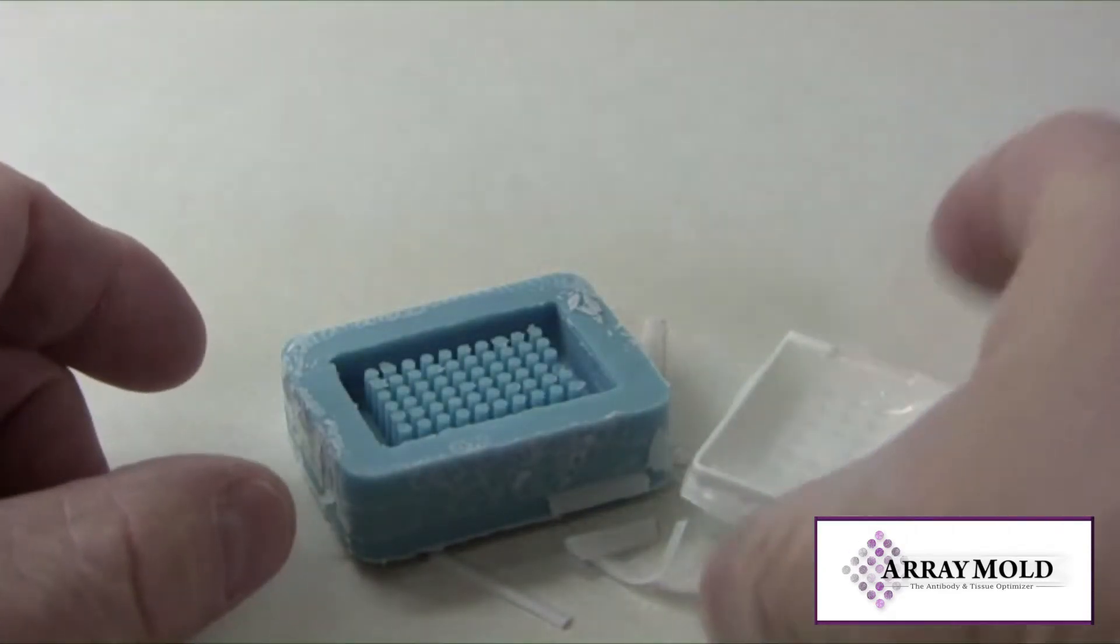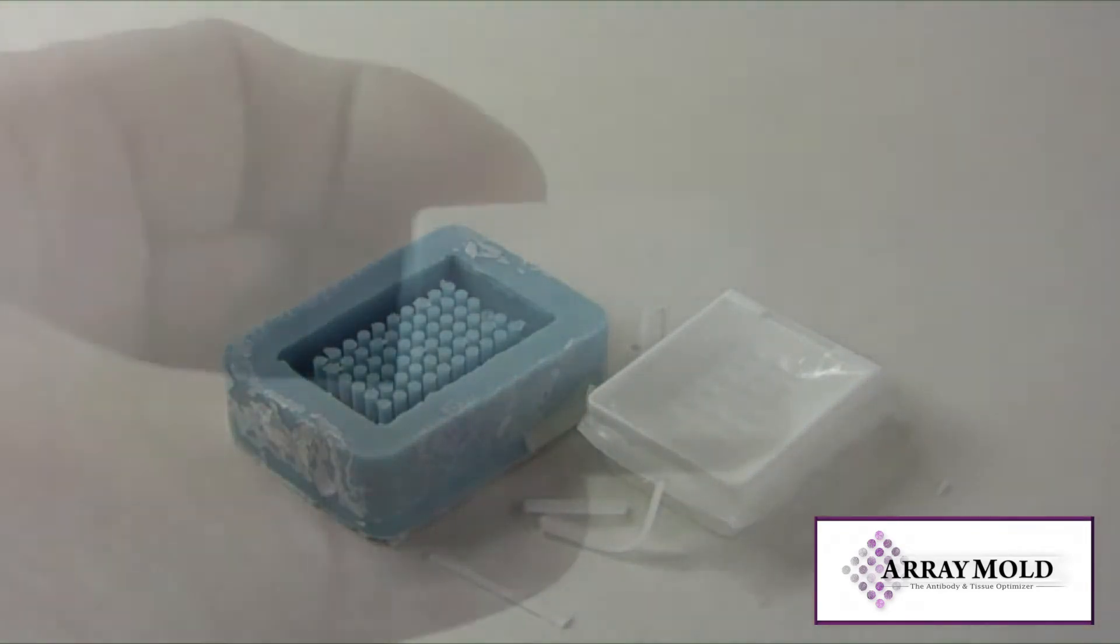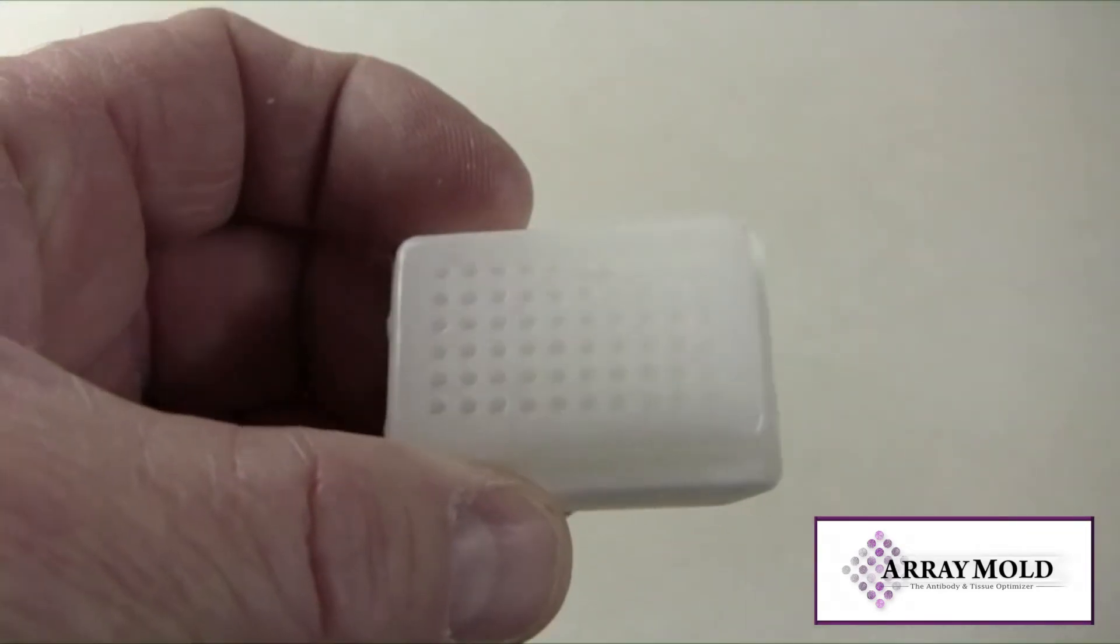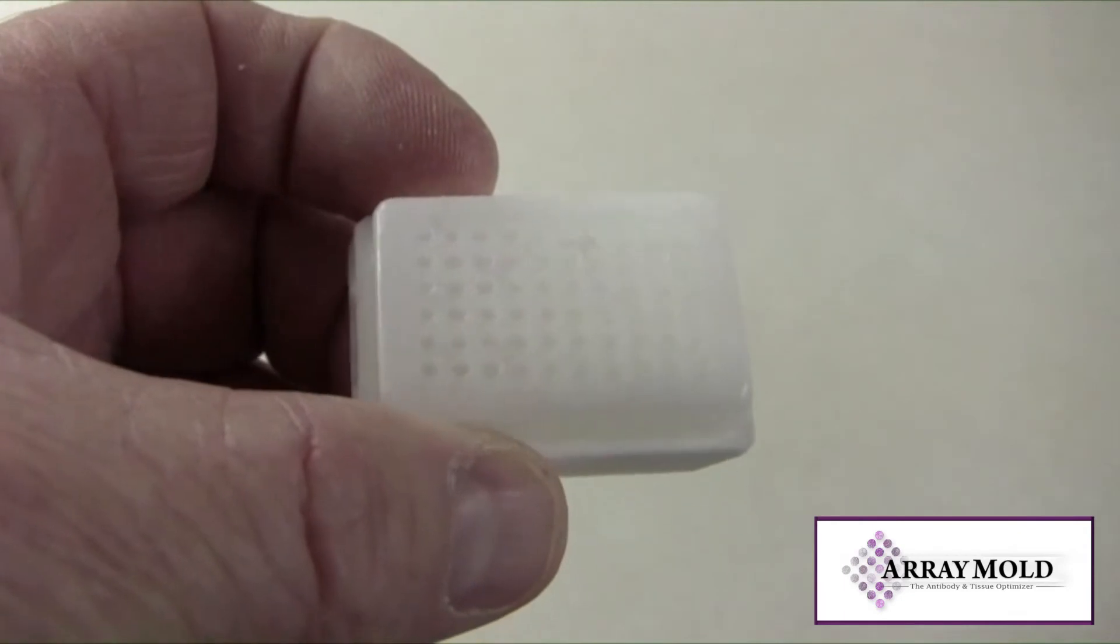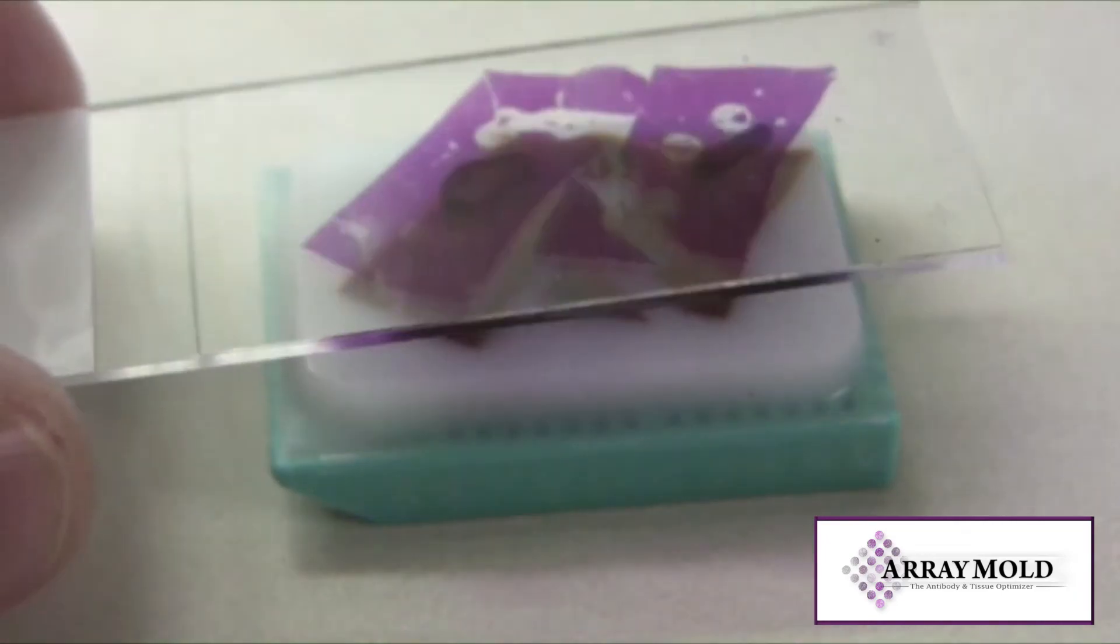The array mold we're using here is one of our first created. As you can see, it came to us with a short core rod in it. Since we couldn't sell it, we've been using it for our testing. In the last three years, I believe we've made around 40 to 60 paraffin arrays with this single array mold.